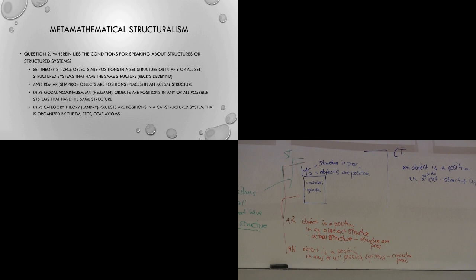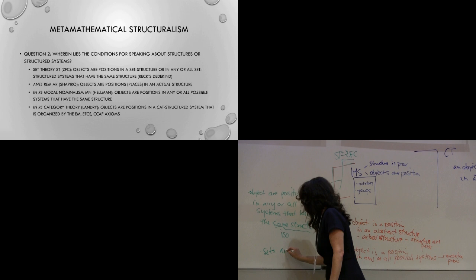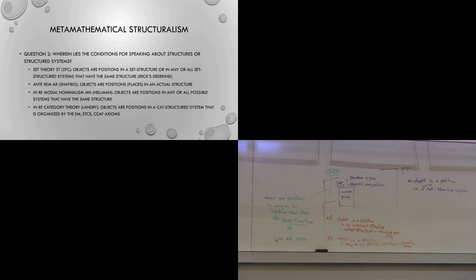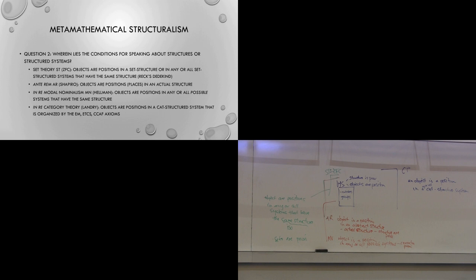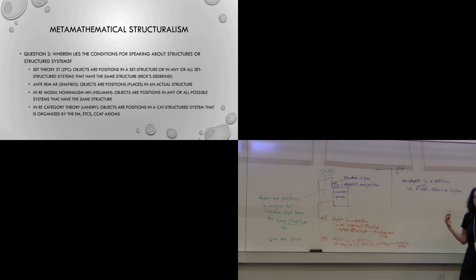So again, similar to Hellman's view, this is an in-re view as opposed to an ante-rem view. However, what is different is that nothing is taken as prior here. For the set-theoretic account you use ZFC, so in some sense you have to assume that sets are prior. For Shapiro you have to assume that systems are prior. For Hellman you've got concreta as prior. Here, nothing needs to be assumed as prior. People got confused because they assumed you'd have to assume categories as prior in the same way that you assume sets as prior. What I tried to argue is that the only things that are prior on this account are the axiom systems.